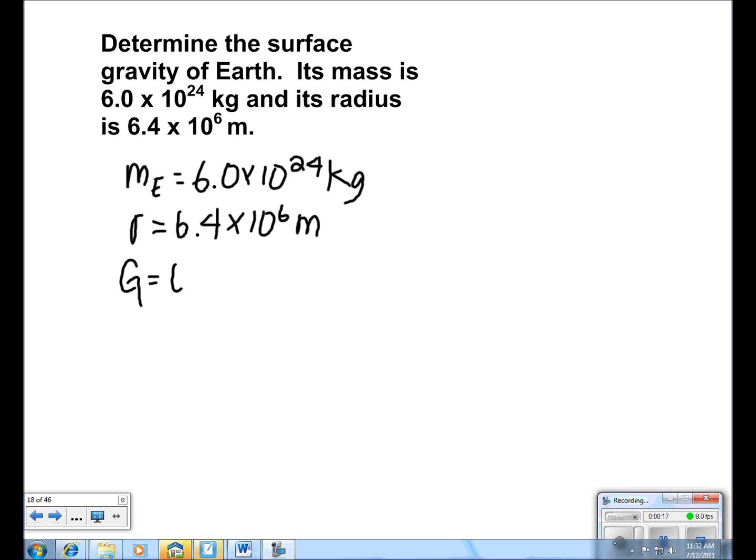We're always given that G is equal to 6.67 times 10 to the negative 11 newton meters squared per kilogram squared. We use the formula g equals GM over r squared.